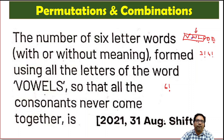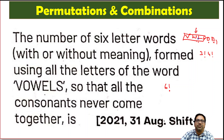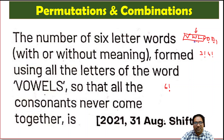Within the consonant packet, we can arrange the four letters in four factorial number of ways. So if all consonants are together, the total number of words that can be formed is three factorial into four factorial — arranging the three packets multiplied by the four factorial arrangements within the consonant packet.